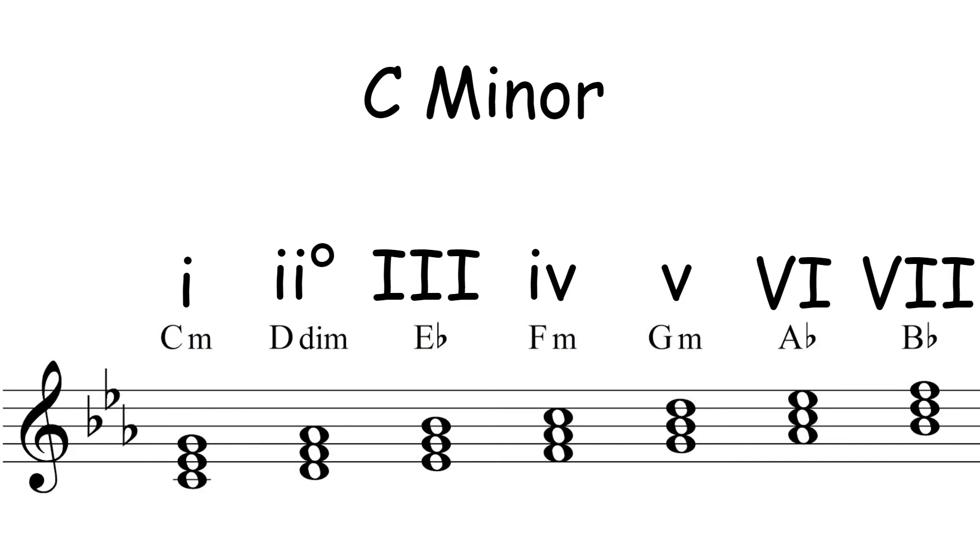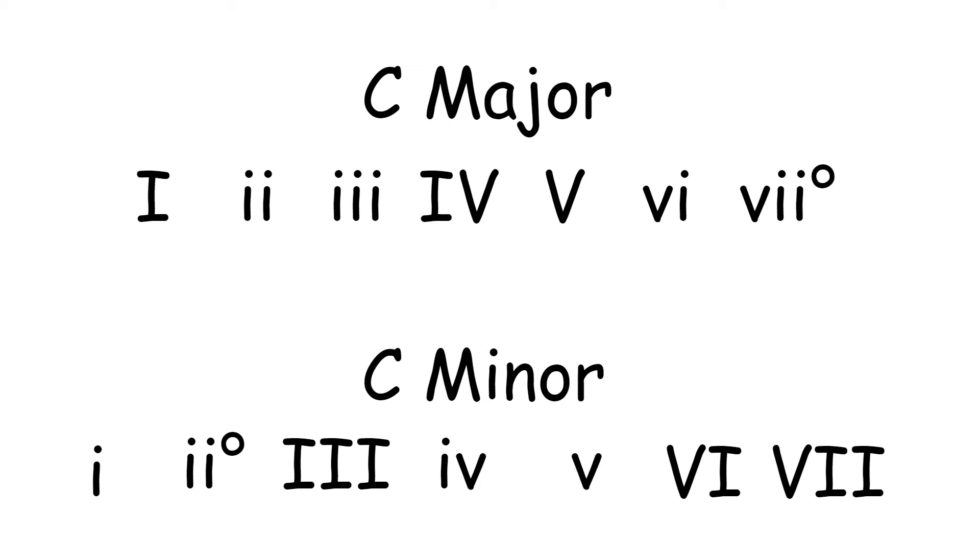If you look at the C major versus the C minor, the first chord is always—the form of the first chord always matches the scale you're in. So if you're in a major scale, the first chord will be major. If you're in a minor scale, the first chord will be minor. That's easy to remember.